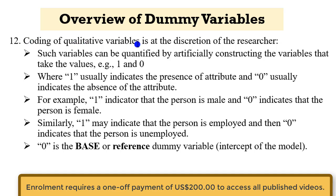Always know that coding of qualitative variables is at the discretion of the researcher. Such variables can be quantified by artificially constructing variables that take the values of 1 and 0, where 1 usually indicates the presence of the attribute and 0 usually indicates the absence. For example, 1 indicates that the person is male and 0 indicates female, or it can be the other way around. Similarly, 1 may indicate somebody who is employed and 0 may capture those who are unemployed — you can switch it depending on whichever you want as the base.